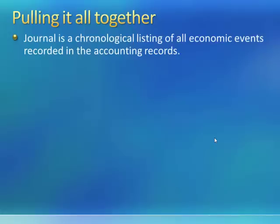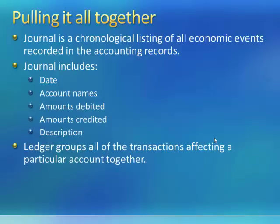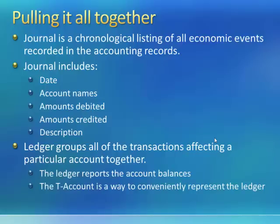The journal is a chronological listing of all economic events that are recorded in the accounting records. The journal includes the date, the account names, the amounts debited, the amounts credited, as well as a description of the transaction. The ledger groups all of the transactions affecting a particular account together. The ledger reports the account balances, and the T account is a convenient way to represent the ledger. Remember that accounting records include both a journal and a ledger. They summarize all of the events that are recorded in the accounting records, but in a different way.